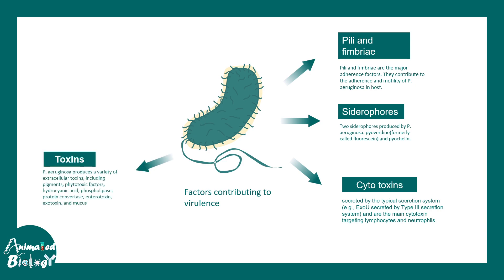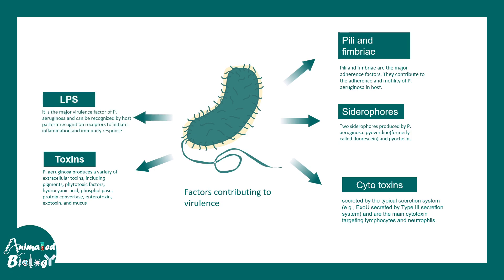There are different toxins which are useful for the bacteria and damaging to the host, including phospholipases, several pigment-type toxins, and extracellular toxins. Lipopolysaccharide is the key inflammatory mediator — generic to most gram-negative bacteria — and triggers an inflammatory response via TLR4. There are also different proteases such as elastase A, elastase B, large protease, and protease 4, secreted by this bacterium, which can damage host cells and immune cells.